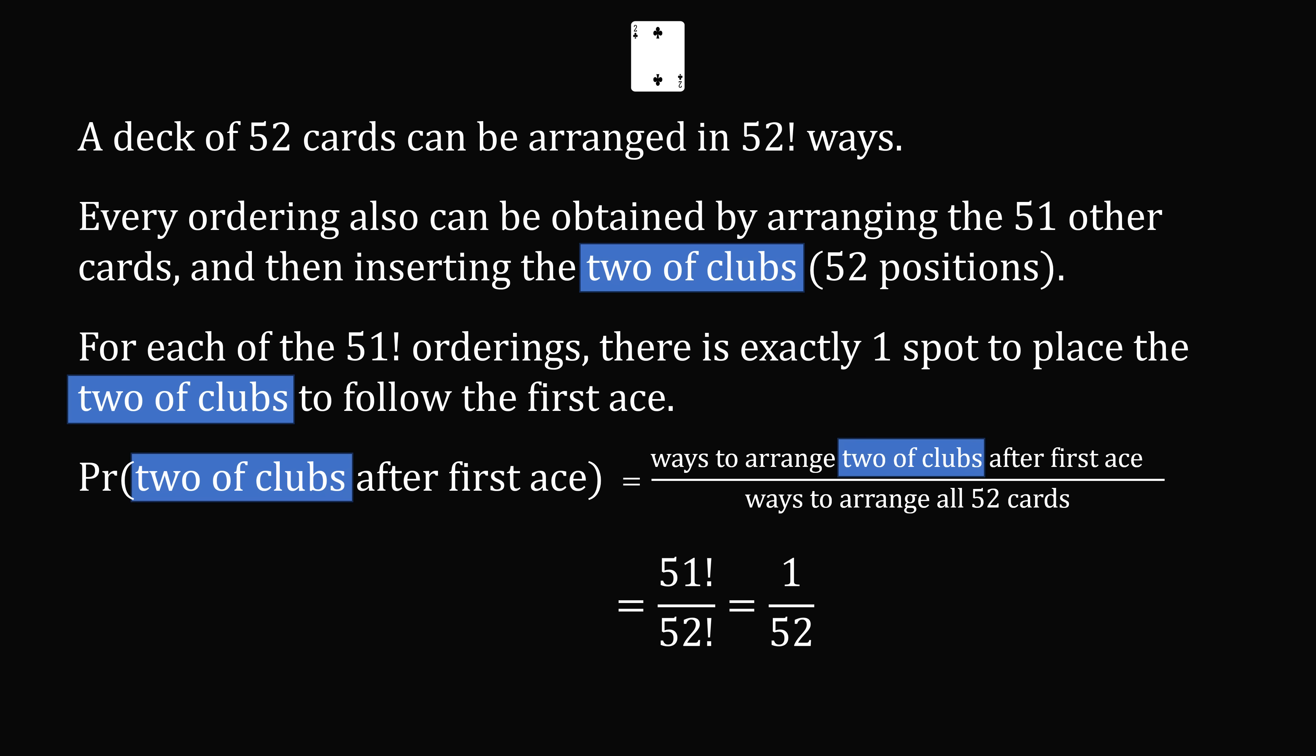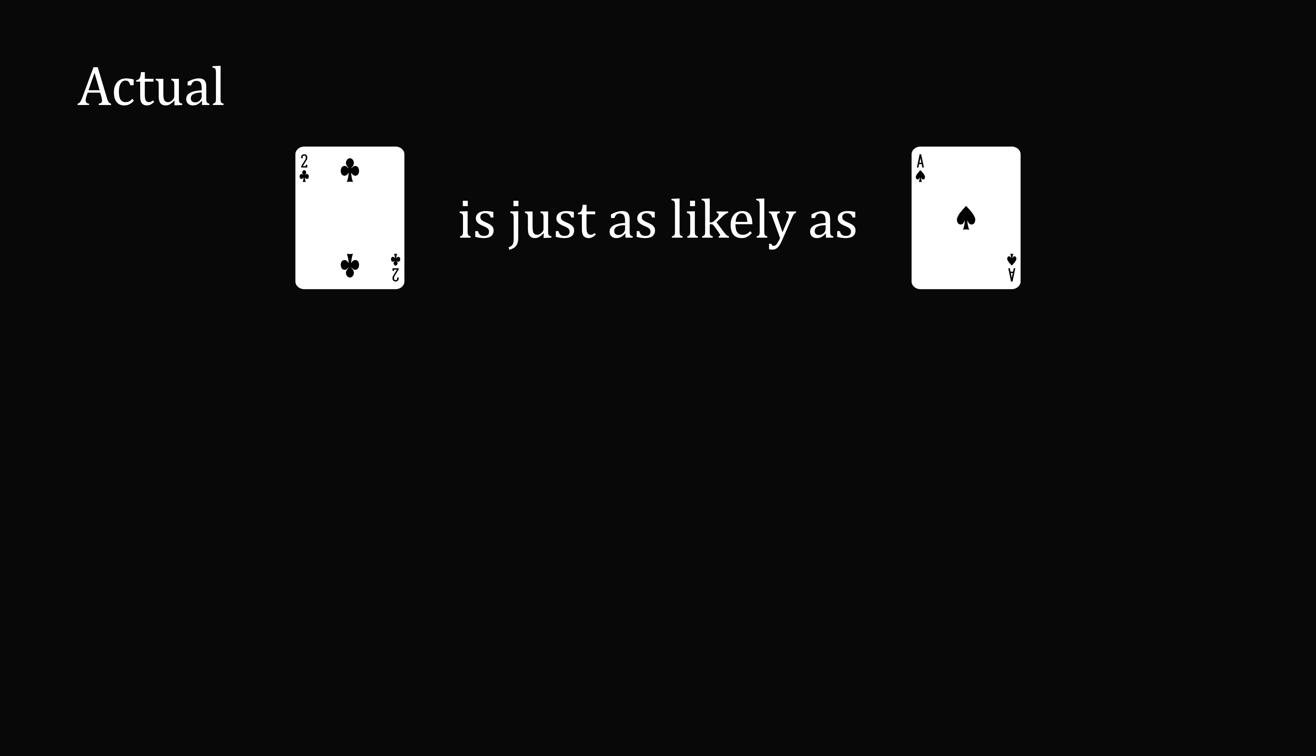So once again, this probability is equal to 1 over 52. And therefore, the actual answer is that the two of clubs is just as likely as the ace of spades following the first ace. Both of them are equal to 1 over 52. And that's the answer.